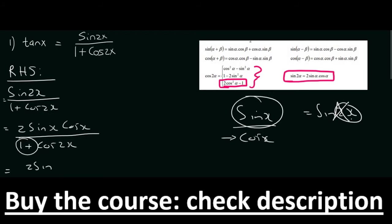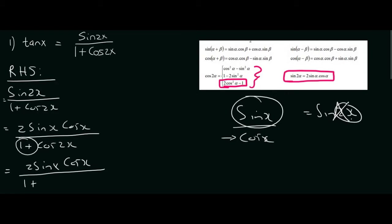So we're just gonna write it as 2 sin x times cos x, and then we're gonna replace—so we're gonna say 1 plus, and then we're gonna replace cos 2x with 2 cos squared x minus 1.